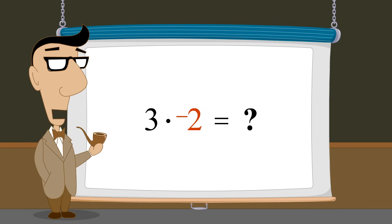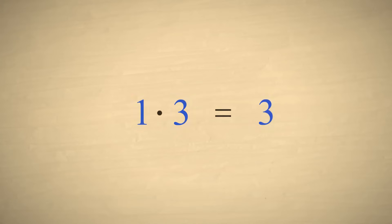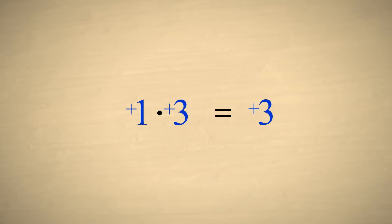With the invention of negative numbers, the rules of multiplication had to be expanded to allow the operands to be either positive or negative. The rules of multiplication were picked so as to keep everything consistent. For instance, since 1 is the multiplicative identity, if a number is multiplied by 1, we should expect that the number's value and sign will not change.